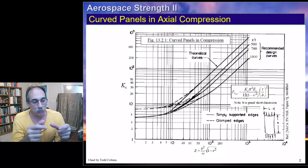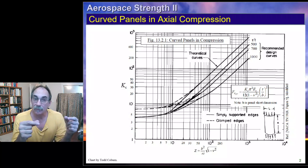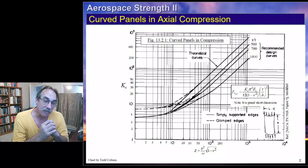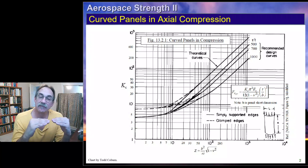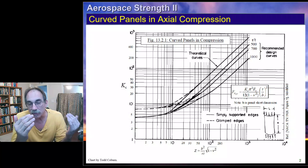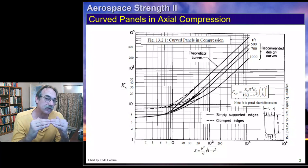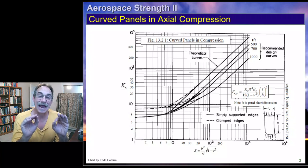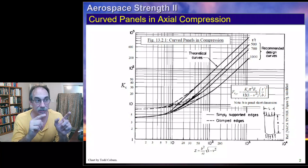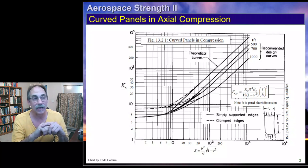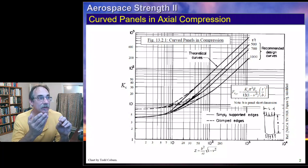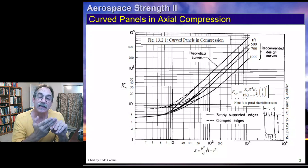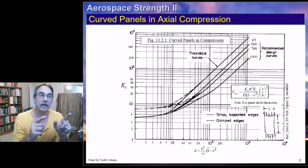Going back to our panel on the bottom of the fuselage, we could also evaluate that as a flat panel. That would generally give conservative results. If we want a better estimation of what it actually does, we'd use this curved panel approach: get Z, go to the R over T, calculate our K sub C, and plug it into this formula.